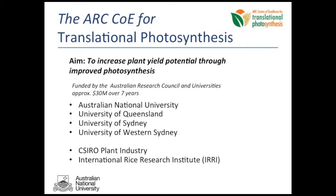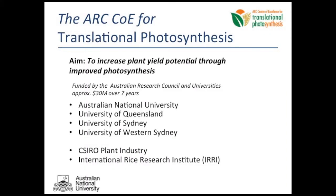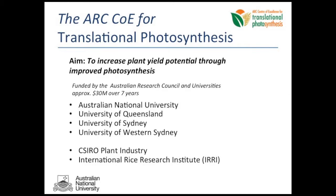So what is the ARC's Centre of Excellence for Translational Photosynthesis about? It could be captured in the sentence: to increase plant yield potential through improved photosynthesis. It's funded by the Australian Research Council and universities at approximately $30 million over seven years — a significant effort — and it involves the Australian National University, University of Queensland, University of Sydney, and University of Western Sydney, with partner organisations in CSIRO Plant Industry and the International Rice Research Institute. We're currently trying to put this centre together and get it off the ground as a functional entity to undertake the projects we'd like to explore.